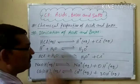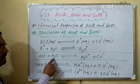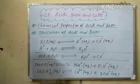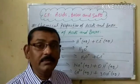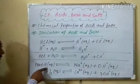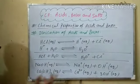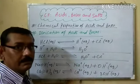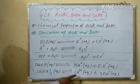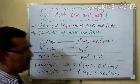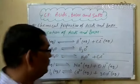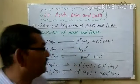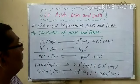Similarly, all bases contain a replaceable hydroxyl ion (OH-). When sodium hydroxide dissociates, it forms sodium ion (Na+) and one hydroxyl ion (OH-). Calcium hydroxide dissociates to give calcium ion (Ca2+) and two hydroxyl ions. So acids release hydrogen ions (available as hydronium ions in solution), and bases release hydroxyl ions.